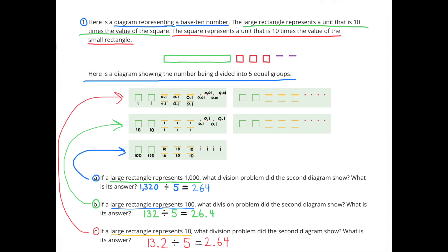Here is a diagram representing a base 10 number. The large rectangle represents a unit that is 10 times the value of the square. The square represents a unit that is 10 times the value of the small rectangles. Here is a diagram showing the number being divided into 5 equal groups. Part A: If a large rectangle represents 1,000, what division problem did the second diagram show? What is the answer?